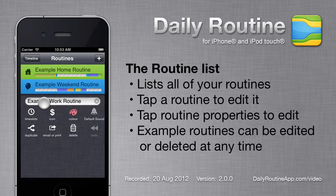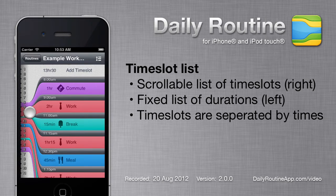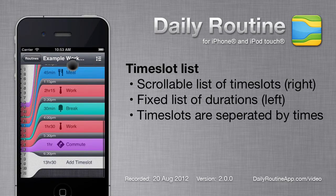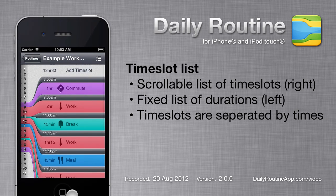Routines have many editable properties, such as name and icon, but the most important is time slots. The time slots list has two parts: a scrollable list of time slots on the right and the relative duration of those time slots on the left.